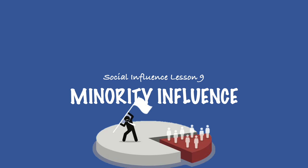Hello everyone and welcome back to A-Level Psychology. Today we're going to be looking at Social Influence Lesson 9, which is all about Minority Influence. We'll start by looking at the theory element of the topic and an example six mark outline so that you can see how it all comes together in an exam, and then we'll follow that up with some evaluation points and some exam questions.